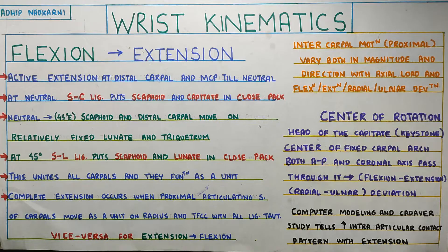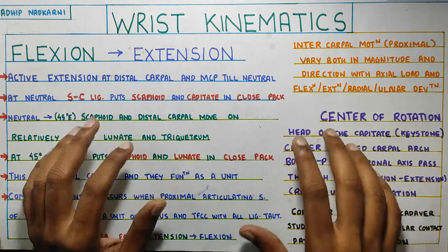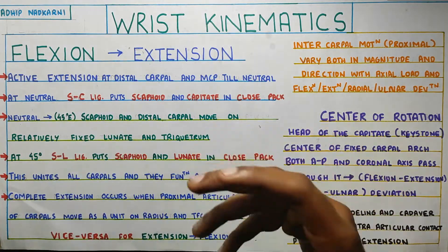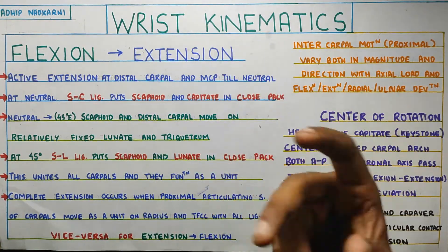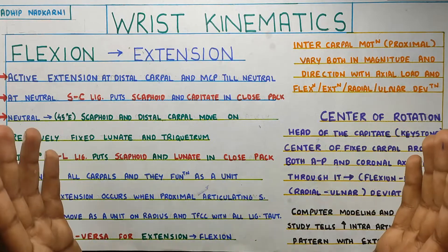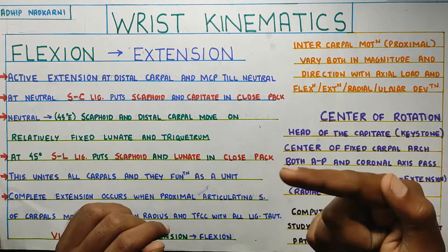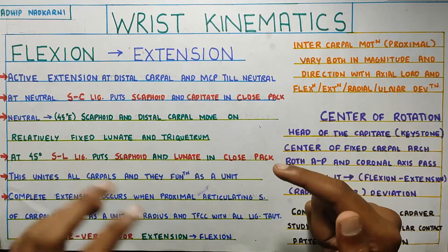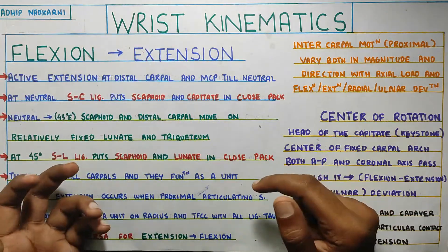In this video, we are going to talk about wrist kinematics. Till now we have discussed about the structure. Now we will be moving on to kinematics - what is kinematics? It is the movement. Here we will be discussing about the movement, around what axis the movement happens, and what are the movements that are possible at the wrist joint.